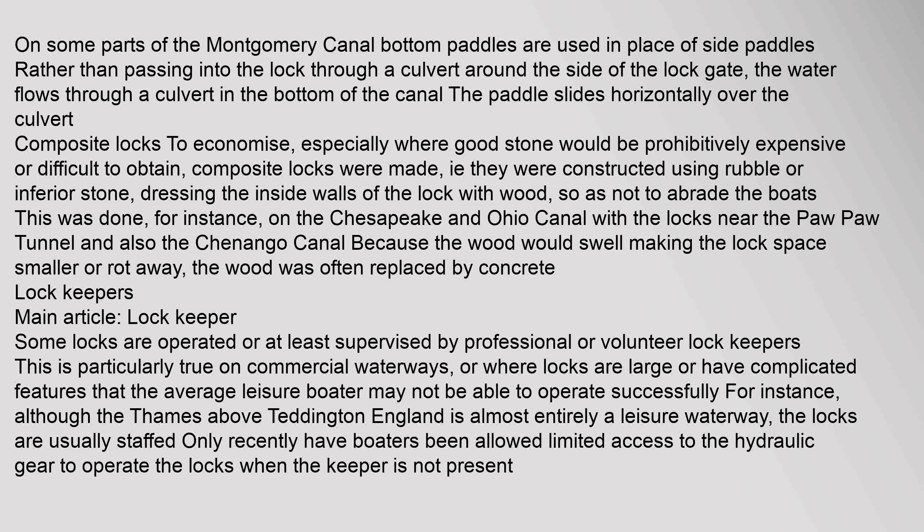Composite locks were made where good stone was prohibitively expensive or difficult to obtain — constructed using rubble or inferior stone and dressing the inside walls with wood so as not to abrade the boats. This was done on the Chesapeake and Ohio Canal near the Paw Paw Tunnel and also on the Shenango Canal. Because the wood would swell, making the lock space smaller, or rot away, it was often replaced by concrete.